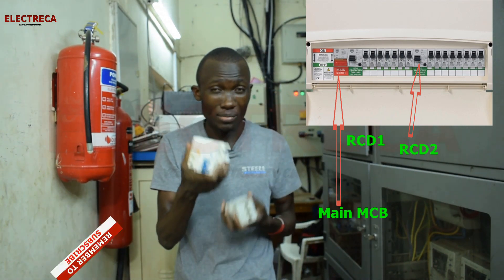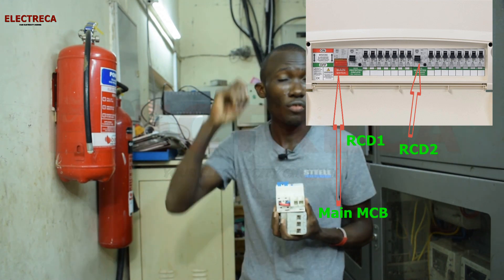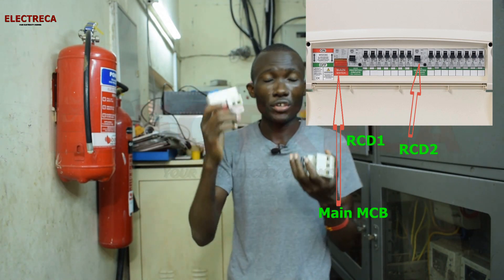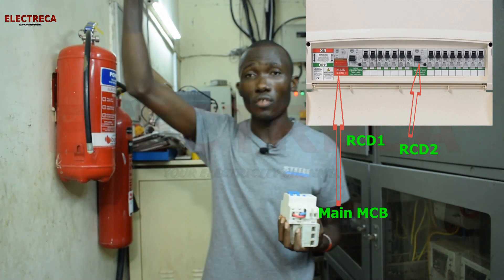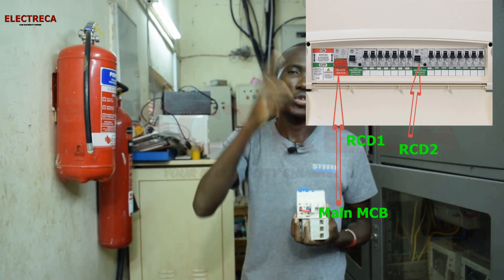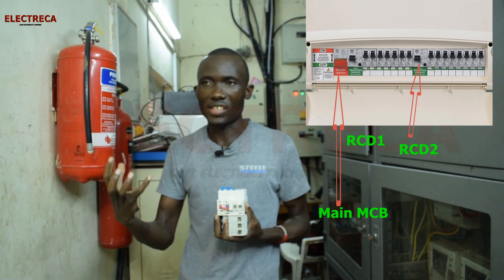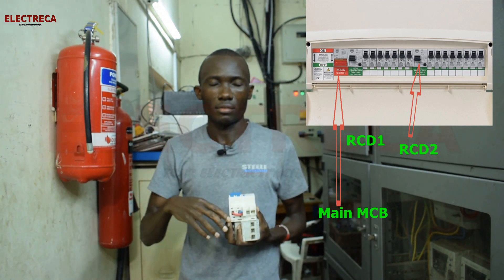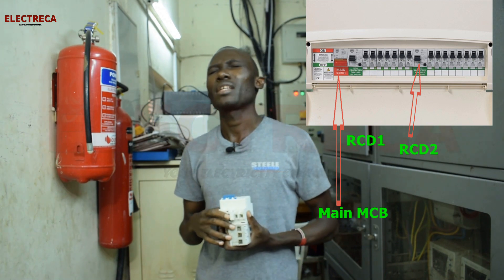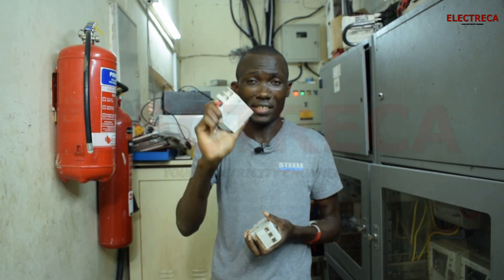If your RCD keeps tripping, that's actually a good thing — it means it's working. You need to find the fault. Switch off all the circuits it controls, reset the RCD, then switch them back on one by one until you find which circuit brings the fault. That's the one to fix. You can do this initial check yourself, then call your technician to rectify it, as tracing the fault in the wiring can be tricky.